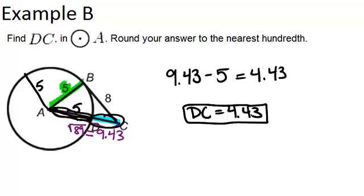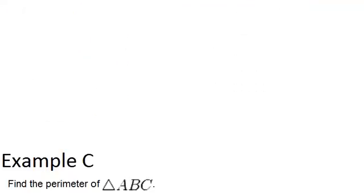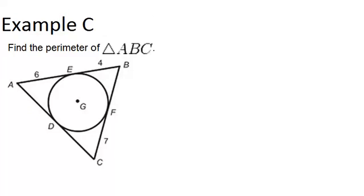Alright, let's look at example C. Find the perimeter of triangle ABC. Alright, so we have a circle that's been inscribed in the triangle, meaning it's inside the triangle and touches that triangle in three points.